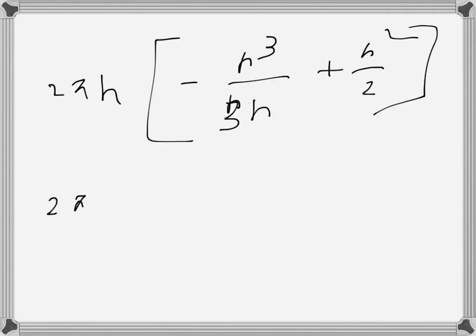The upper limit is r and the lower limit is 0. So 2πh times minus r squared over 3 plus r squared over 2.